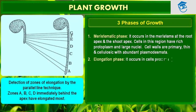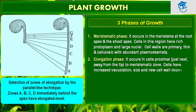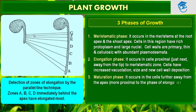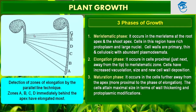Let us understand this by looking at a root tip. The constantly dividing cells, both at the root apex and the shoot apex, represent the meristematic phase of growth. This is the root apex or root tip where constantly dividing cells are seen — that represents the meristematic phase of growth, meaning cells that keep on dividing and have the power of cell division.